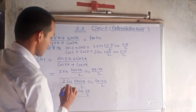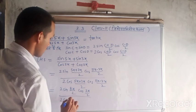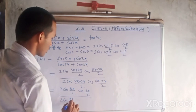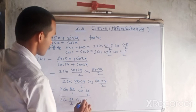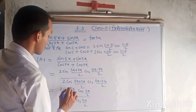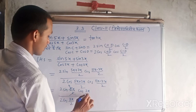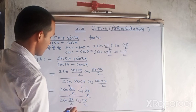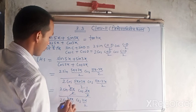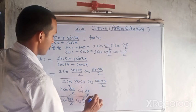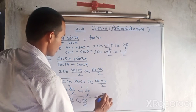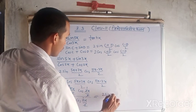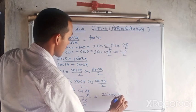We will get 2 cos 8x/2, cos 2x/2. Two divides, so 2 cancels. We can write this as 2 sin 4x cos x upon 2 cos 4x cos x.